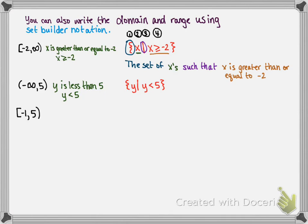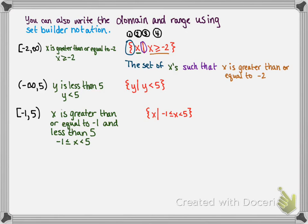Here's our third example from the previous slide. This represented x is greater than or equal to negative 1 and less than 5, written in inequality form. In set-builder notation, we would write: the set of all x's such that x is greater than or equal to negative 1 and less than 5.